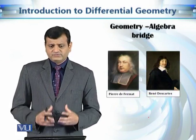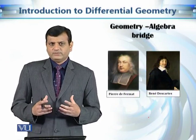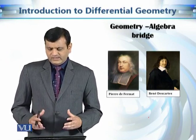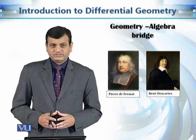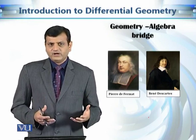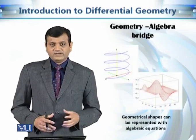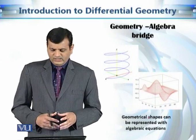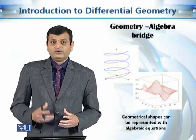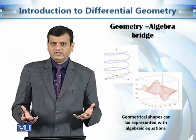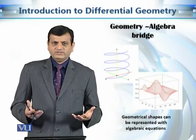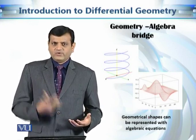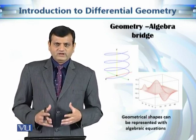The main turn in the history of geometry was the geometry-algebra bridge given by two French mathematicians independently: Pierre de Fermat and René Descartes. They introduced a way to bridge algebra with geometry by introducing the coordinate plane. Using this coordinate plane and coordinates in space, we can discuss the geometry of curves and surfaces using equations. This is an important achievement in mathematics — you can discuss the geometry around you with just equations on the page.